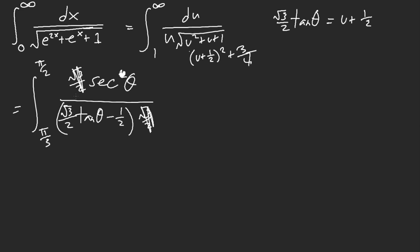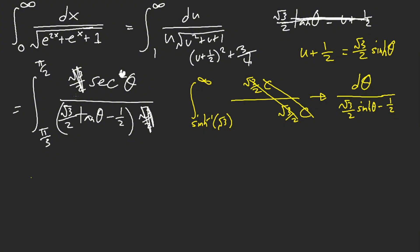If you did trig sub I feel very bad for you. I'm sorry if you went to this route. If you use hyperbolic substitution instead, so like let's say if you let u plus one half equal root three over two cinch theta, I don't know about you but I don't know if I want to deal with this, with hyperbolic and root three.